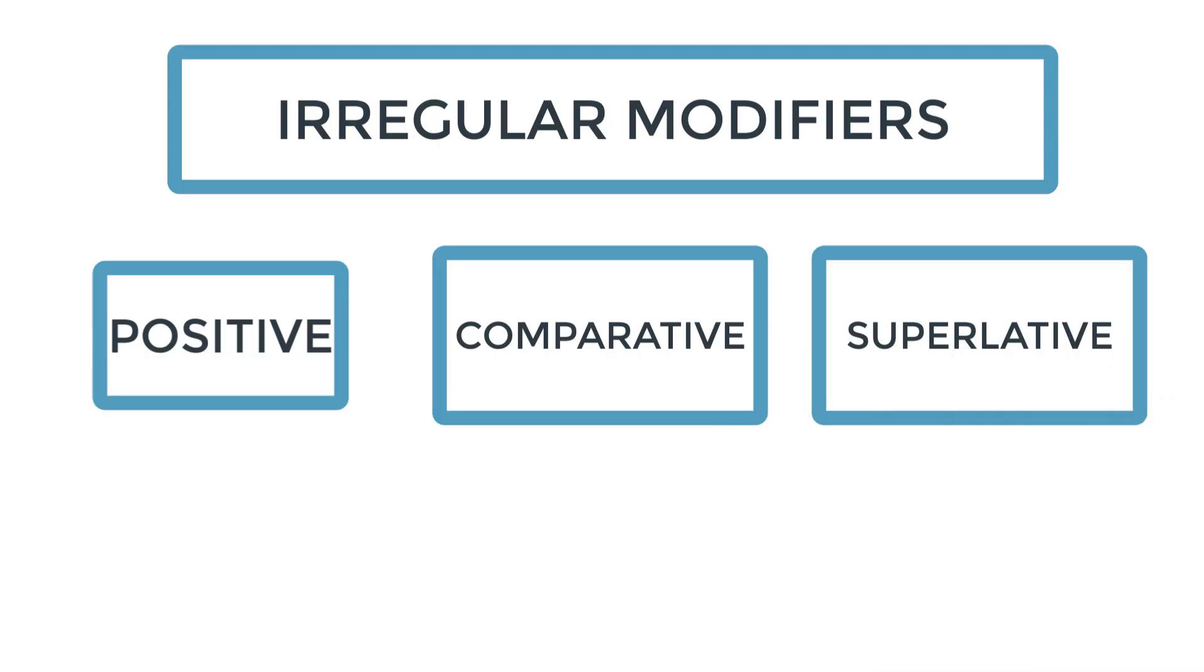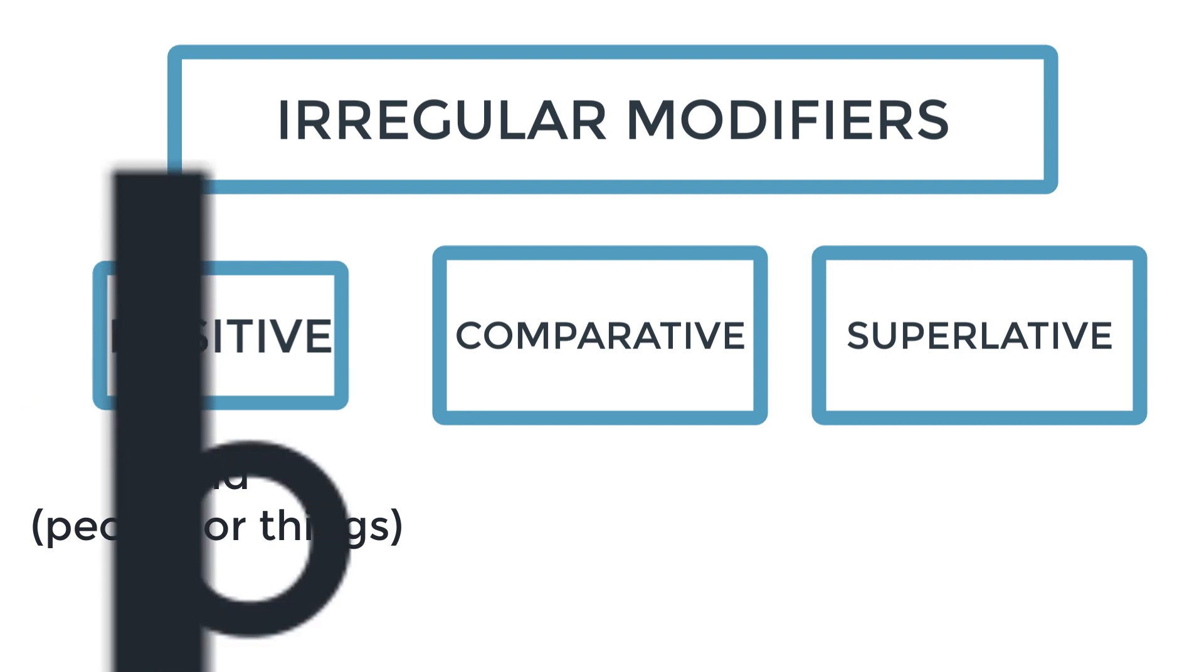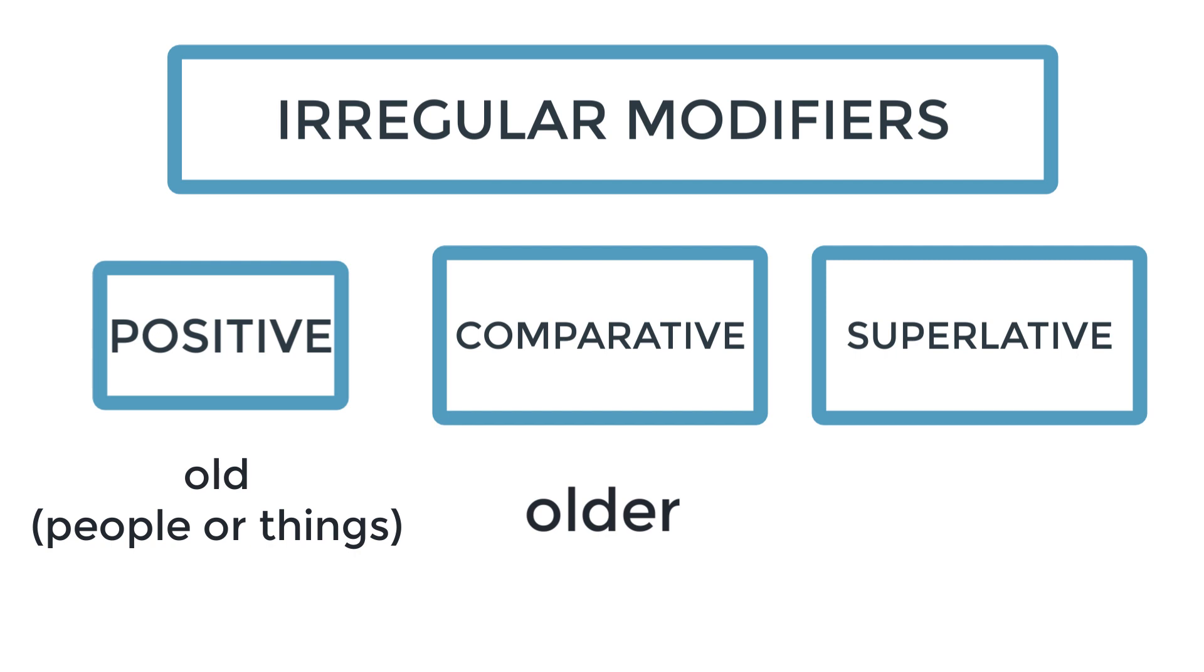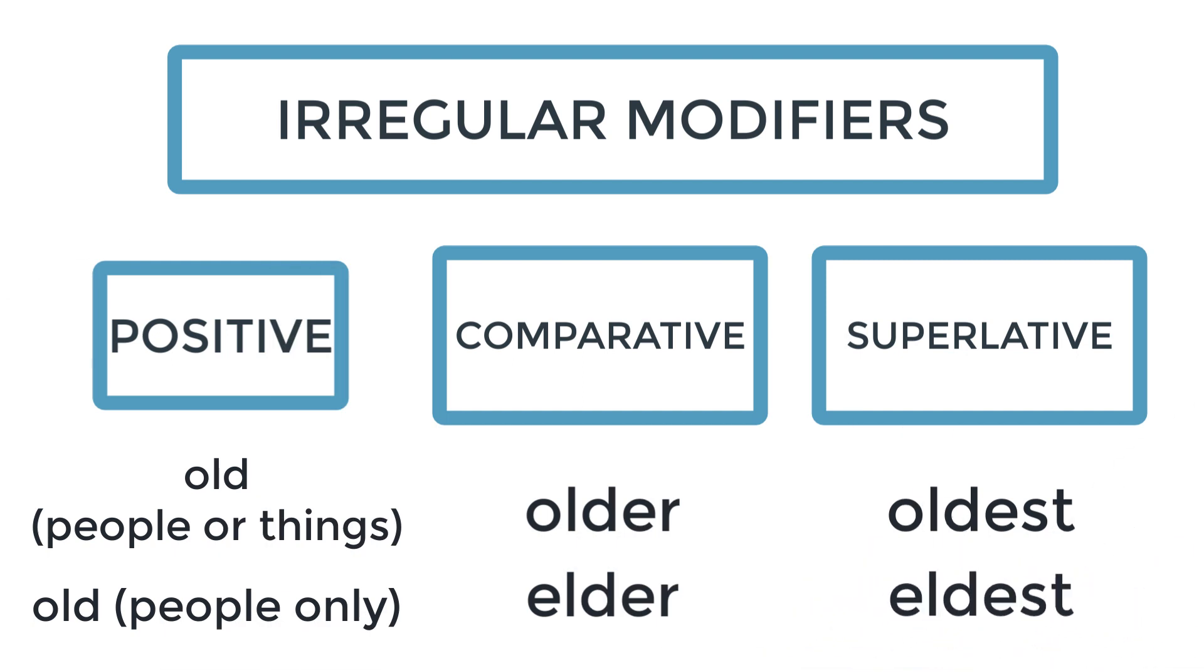And last example, let's go on to the word old. The word old could have two applications. We can use old referring to people or things. So in this case, the comparative would be older, and the superlative would be oldest. However, if you are using old to refer to people only, the comparative is elder, and the superlative is eldest. Old, elder, eldest.